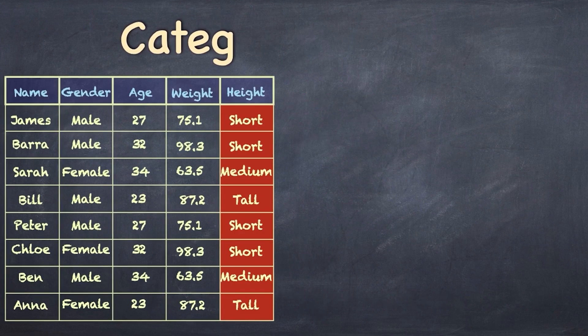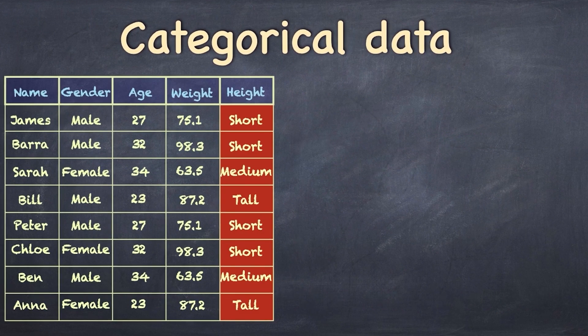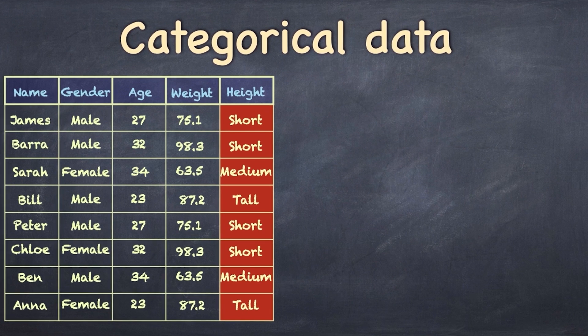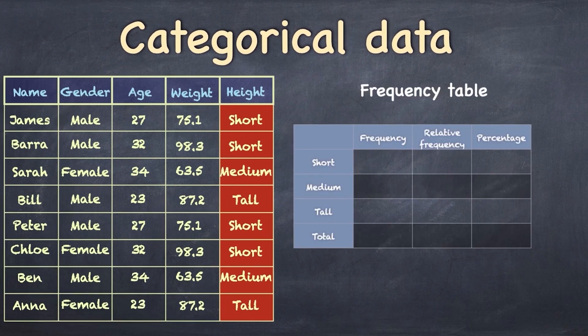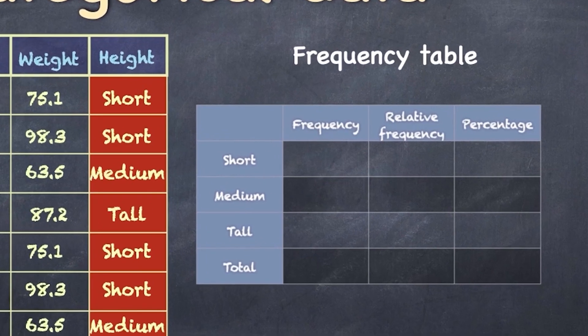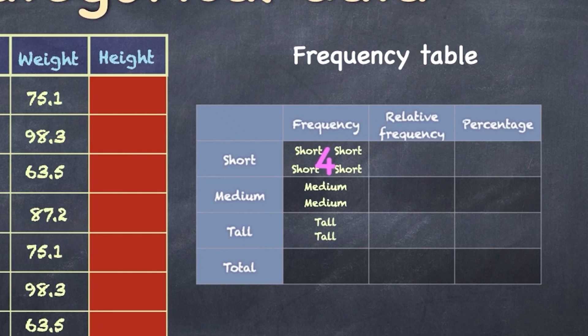Now, let's take a look at a categorical variable like height. Each observation, so James, Barra, Sarah, and so on, has been categorized as either short, medium height, or tall. And we can summarize this categorical variable by counting up the number of observations that land up in each category. So, for example, we could say that there have been four people that have been categorized as short. We can say that there are two that are medium height, two that are tall, and altogether we know that there are eight altogether.